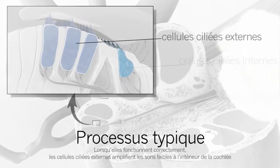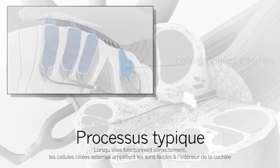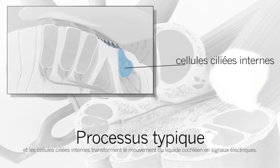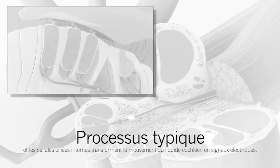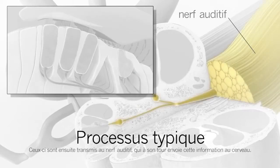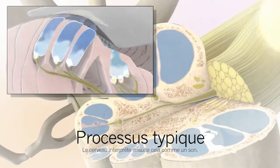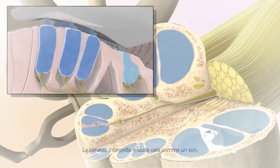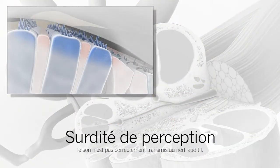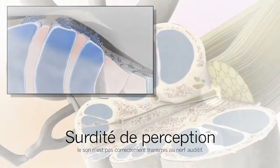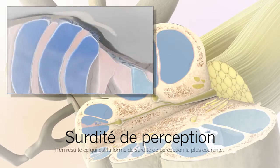When functioning properly, the outer hair cells make soft sounds louder inside the cochlea, and the inner hair cells convert movement of the fluid in the cochlea into electrical signals. These are then passed on to the auditory nerve, which sends this information to the brain. The brain then interprets this as sound. When hair cells are damaged or missing, sound is not transmitted properly to the auditory nerve, resulting in the most common form of sensorineural hearing loss.